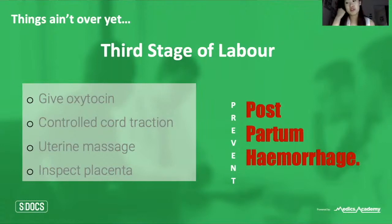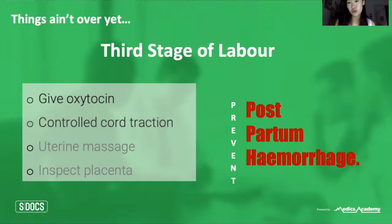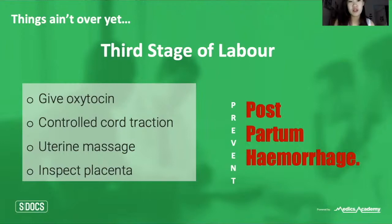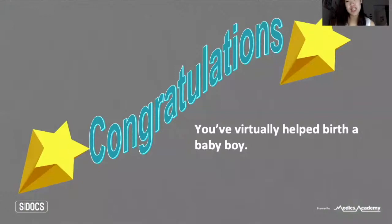Most hospitals use active management of the third stage, which is shown to vastly reduce rates of postpartum hemorrhage. The steps are: first, give oxytocin; second, controlled cord traction — a gentle pull on the umbilical cord to facilitate placental detachment from the uterine wall; third, uterine massage to help retract the uterus; and finally, once the placenta has exited, inspect it carefully — check for clean edges and completeness to ensure no fragments are retained in the uterus.